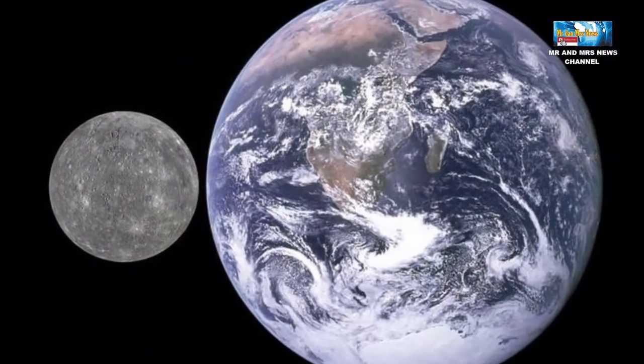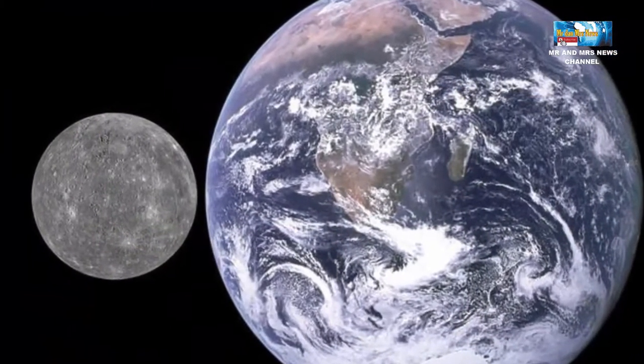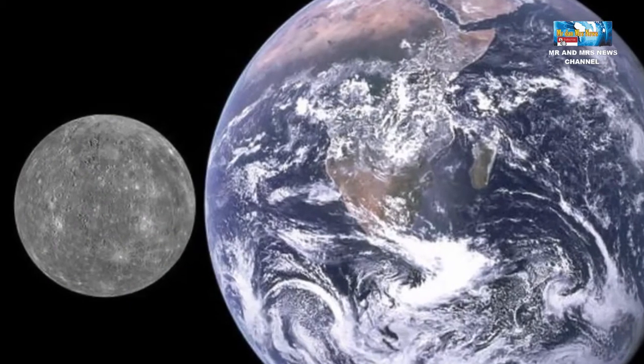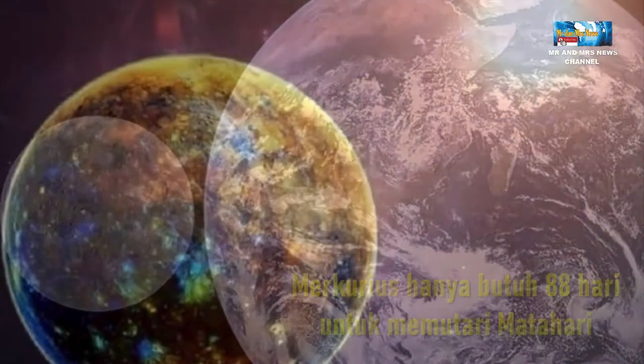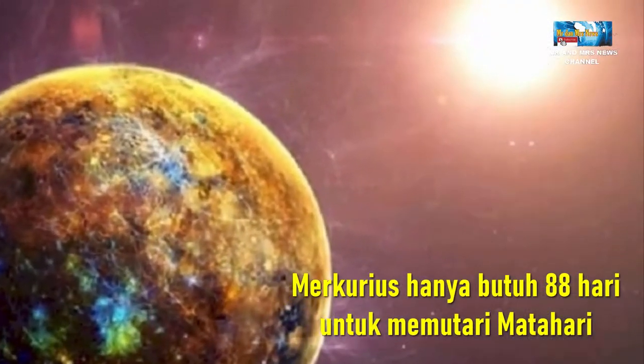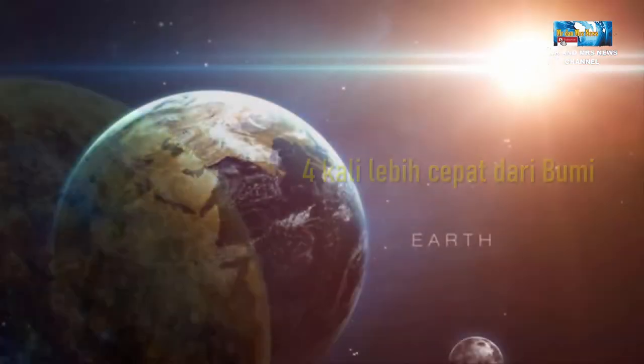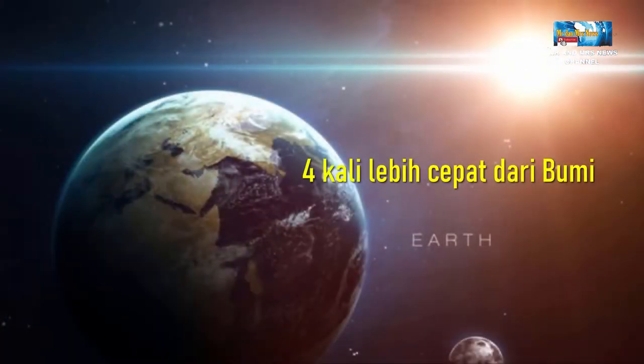Bila dibandingkan dengan Bumi, Merkurius dapat mengitari matahari lebih cepat. Merkurius hanya membutuhkan 88 hari untuk memutari matahari yang berarti sekitar 4 kali lebih cepat dari Bumi.